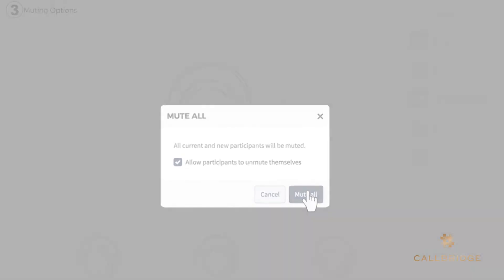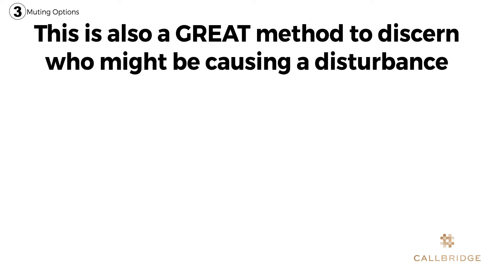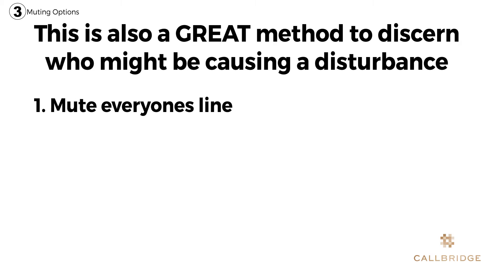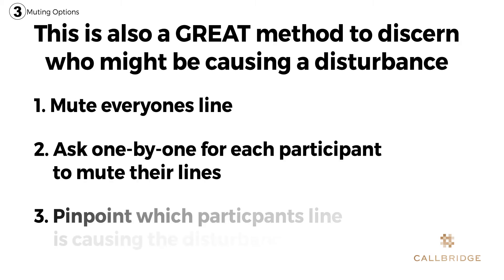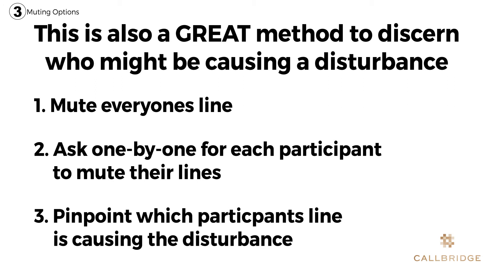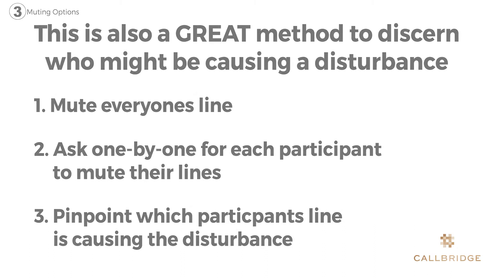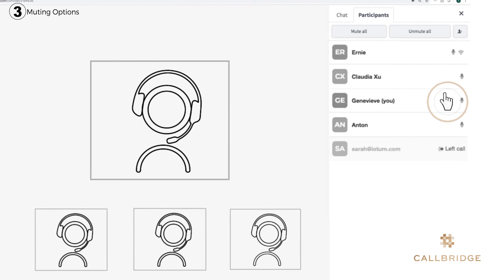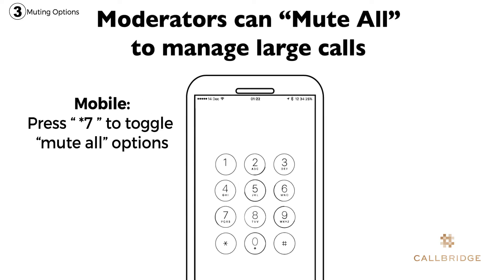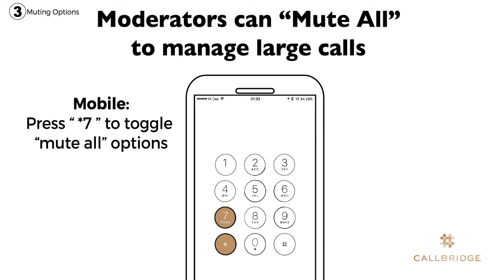Mute all is also a great tool if you find that there is disturbance in your call. Hit mute all and then ask individuals to unmute their line one by one. When you notice the disturbance return, you will be able to pinpoint the cause of the issue. In your online meeting room, you can find this option in the chat section. For those calling via phone, you can press star 7 to achieve this.